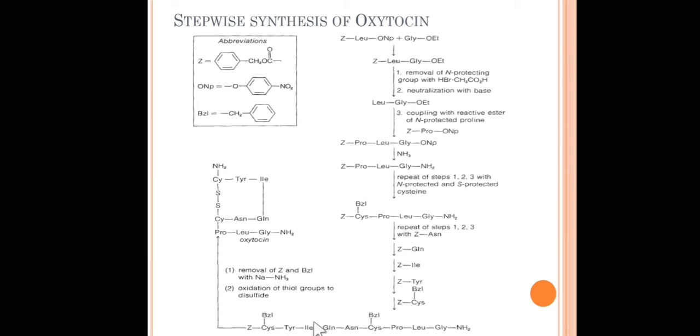Once we get this desired peptide sequence, then removal of Z and benzyl with sodium in NH3, and secondly the oxidation of thiol group to the disulfide bond, we get oxytocin as our desired product.